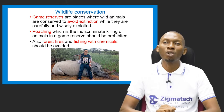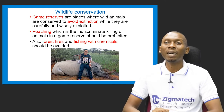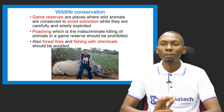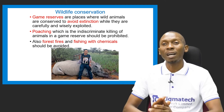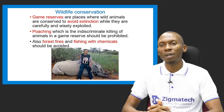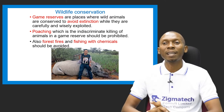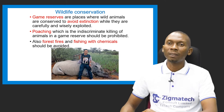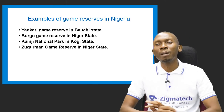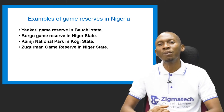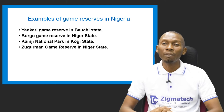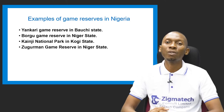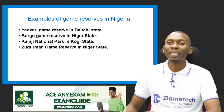Poaching — the indiscriminate killing of wild animals in a game reserve — should be prohibited to avoid the extinction of wild animals. Forest fires and fishing with chemicals should also be avoided to preserve wildlife. Examples of game reserves in Nigeria include Yankari Game Reserve in Bauchi, Bogu Game Reserve in Niger State, Kainji National Park in Kogi State, and Zugurma Game Reserve in Niger State.